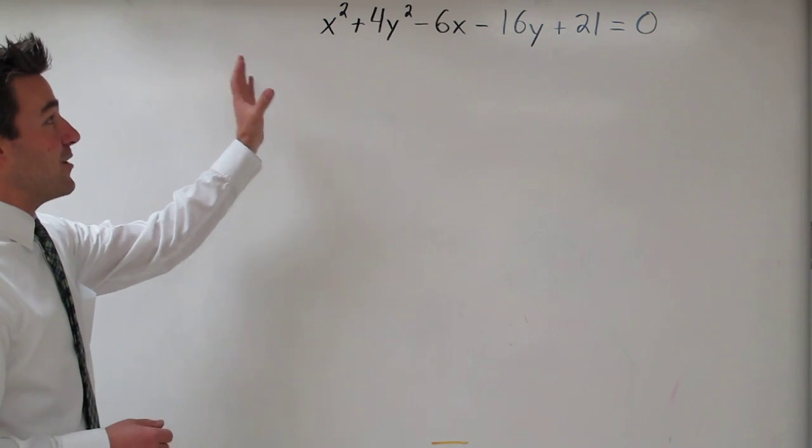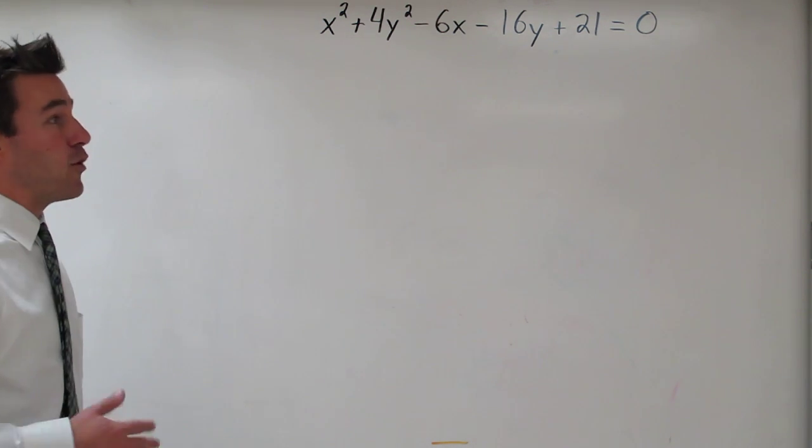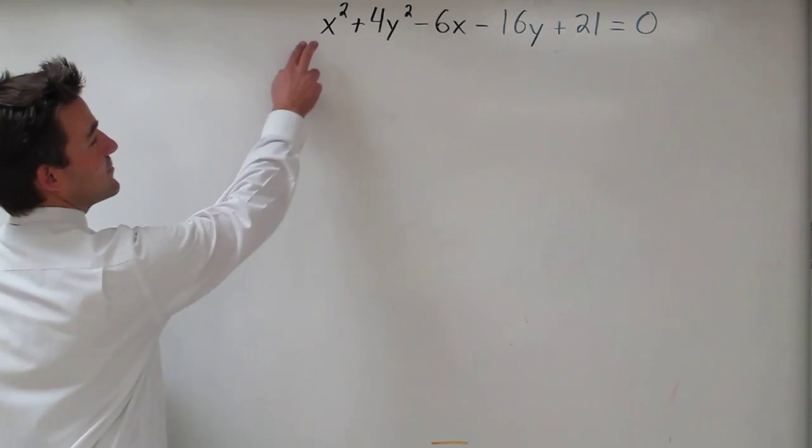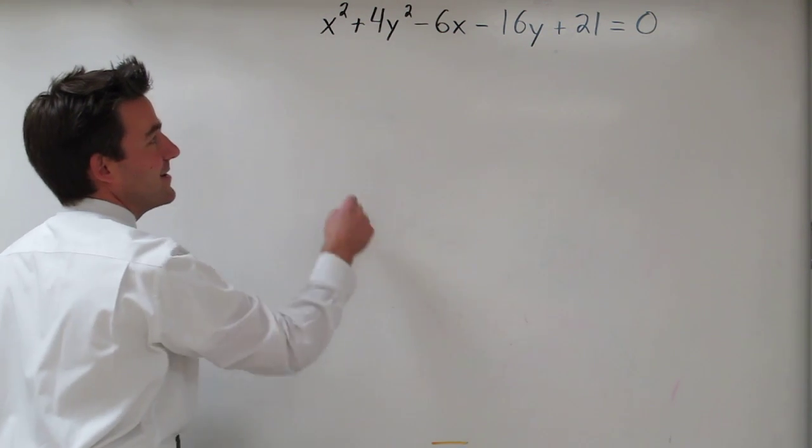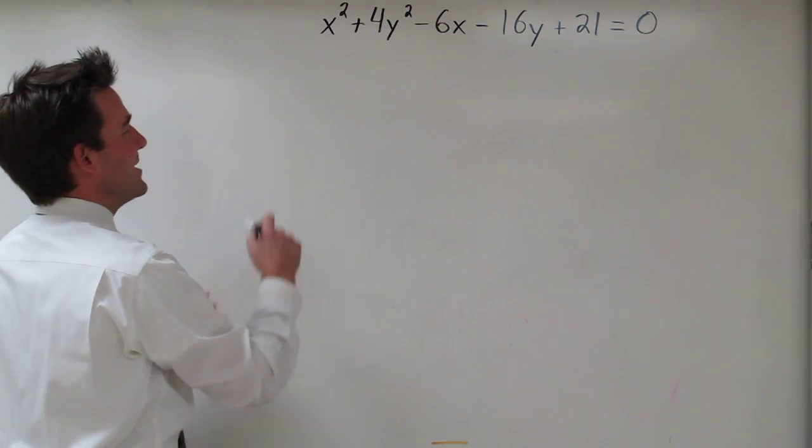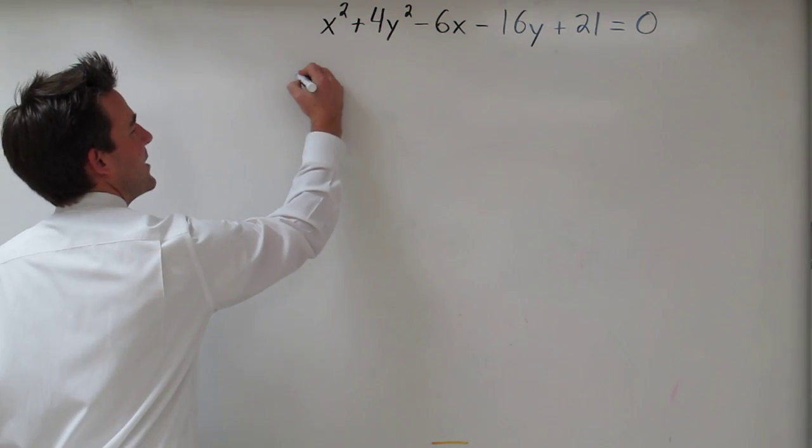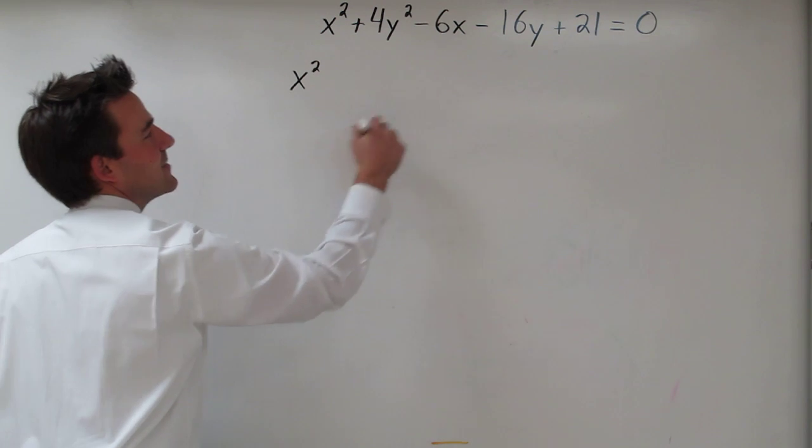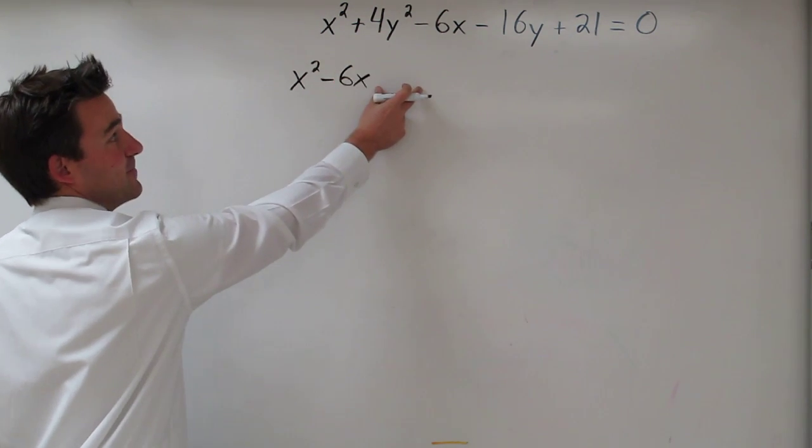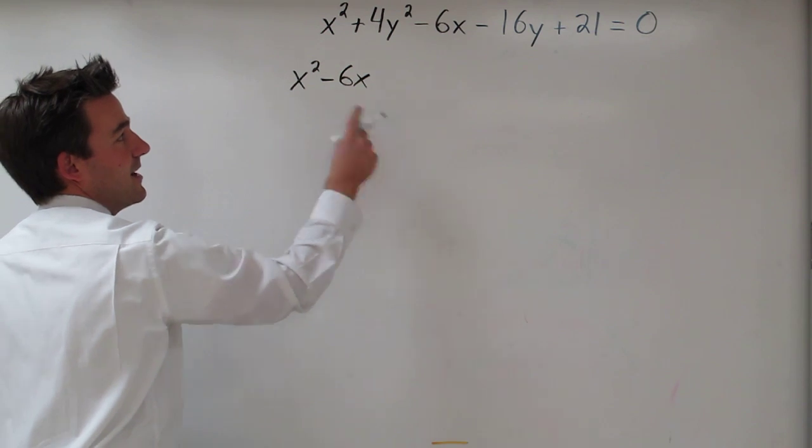Okay, so the first thing we're going to do here is group the variables. By grouping the variables, it means we're going to put all the x's together, all the y's together, and all the constants together. So let's start with the x's. We have x squared minus 6x, and let's leave a little bit of space.